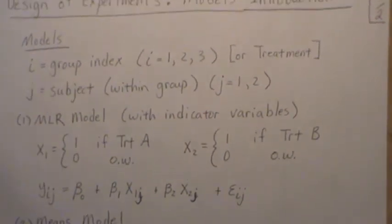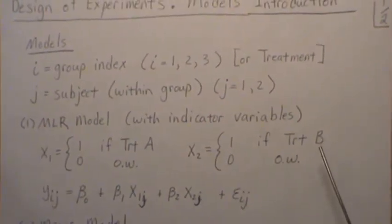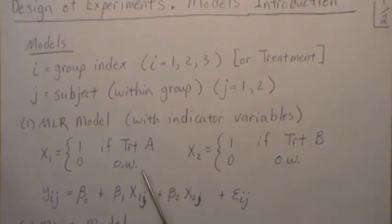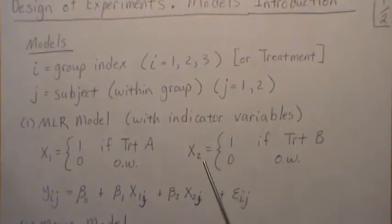What we looked at in multiple regression, in the playlist General Linear Models Multiple Regression, we had what's called indicator variables. So if we had treatments A, B, and C, we had to use two indicator variables, sometimes called dummy variables, to model the effect of treatments A, B, and C. And we did it like this.